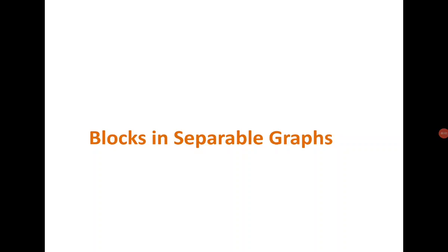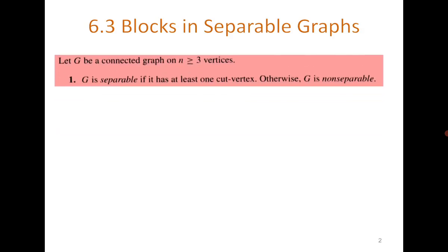Good morning everyone. Today we are going to discuss the concept of a block. Let G be a connected graph. We say that this graph is separable if it has at least one cut vertex. The existence of a cut vertex must be there to have the graph be separable. Otherwise, we will say the graph is non-separable.